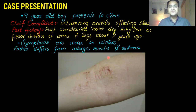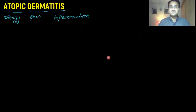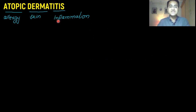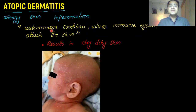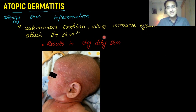How do you diagnose eczema? How do you treat atopic dermatitis? What are the clinical presentations? Atopic dermatitis: 'atopic' means allergy, 'derma' means skin, 'itis' means inflammation. It is the inflammation of skin that results from an allergic reaction. It is an autoimmune condition where the immune system attacks its own organ — the skin — resulting in dry itchy skin.